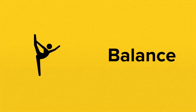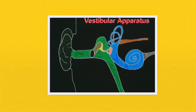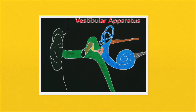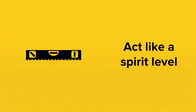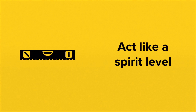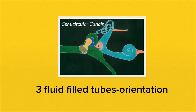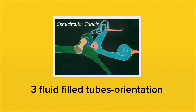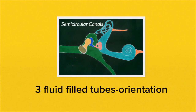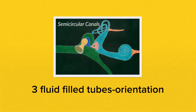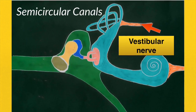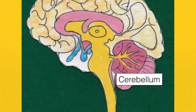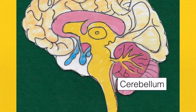The ear also has an important role in balance. The part of the inner ear which deals with balance is known as the vestibular apparatus, made up of the three semicircular canals. These fluid-filled semicircular canals act exactly like spirit levels. The movement of fluid in the semicircular canals is picked up by specialised receptors — as you move your head, this movement is converted into an electrical impulse which is sent to the brain via the vestibular nerve to the cerebellum, which deals with balance.